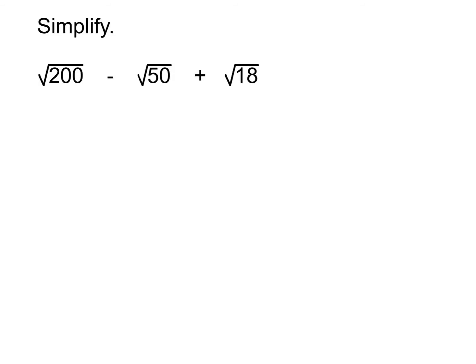And so in order to actually do this problem now, we cannot simply do the 200 minus the 50 plus the 18. That doesn't work because those numbers are trapped inside of another function. That is, they're trapped inside of square roots. So instead, what we actually end up doing first is we simplify each of those radicals. So we do the exact same thing that we did at the very start when they were all just individual problems to simplify, but we're just doing it with the minus and the plus still in there in between them.